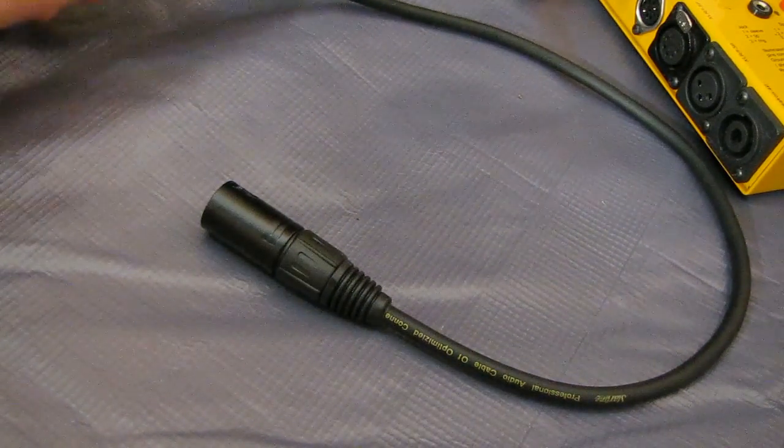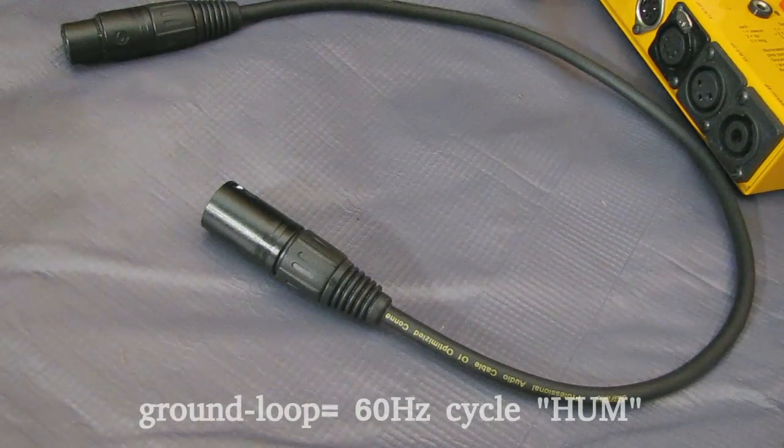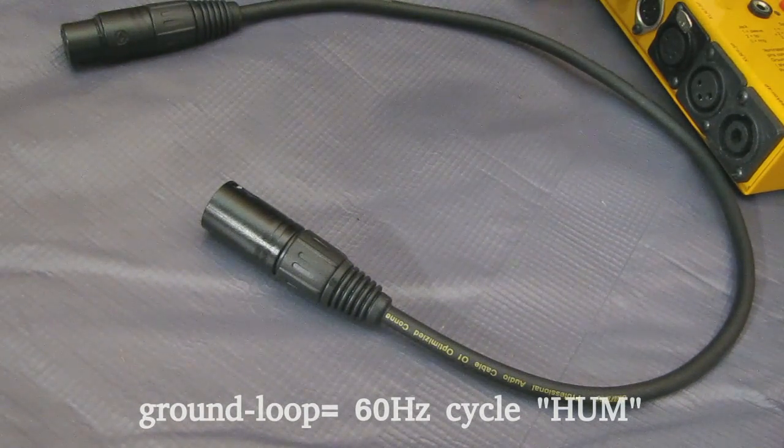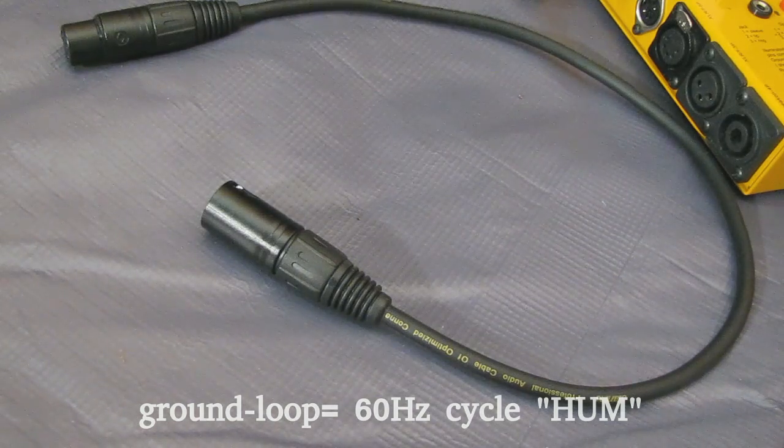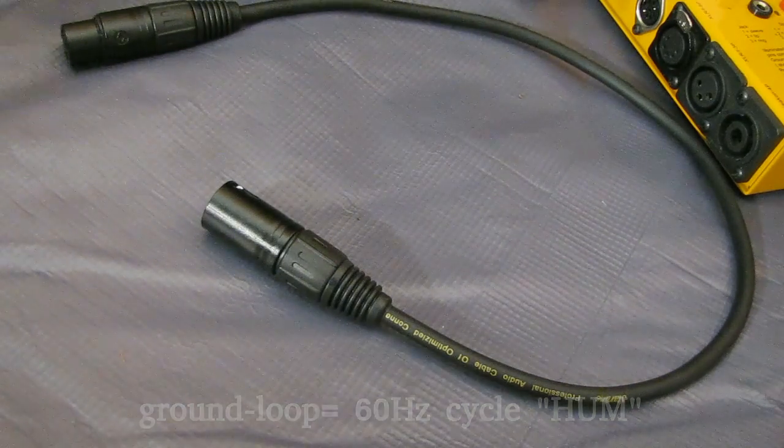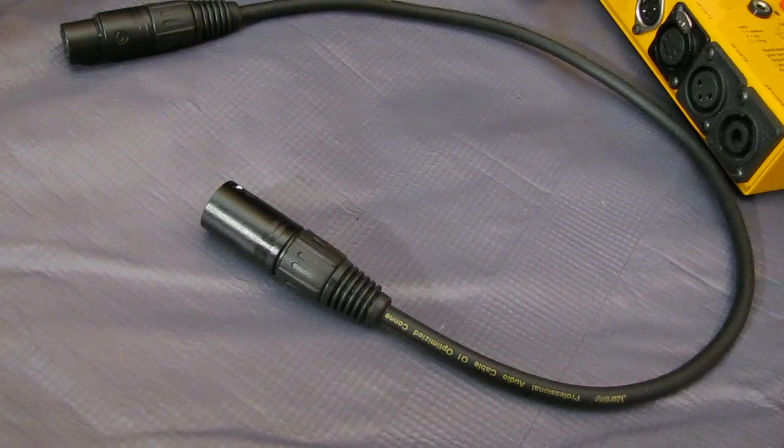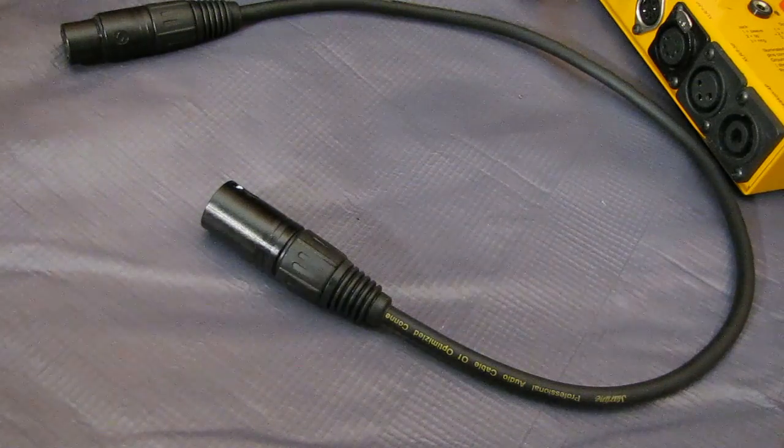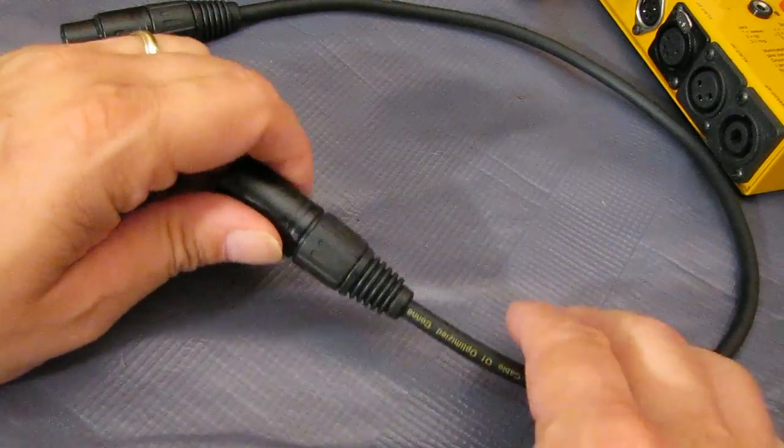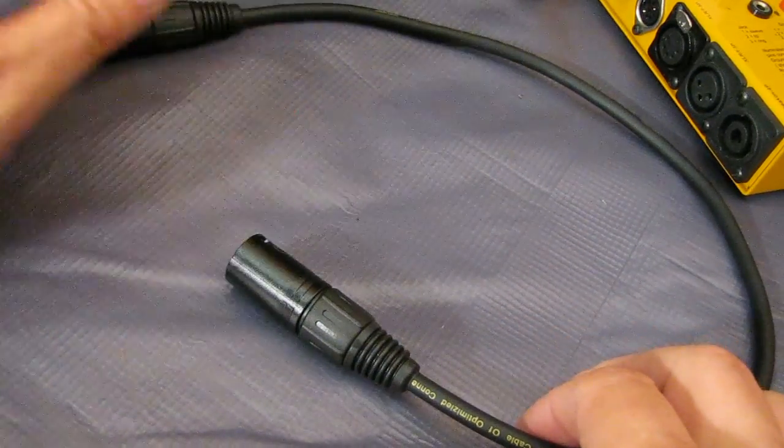A ground loop is a 60 Hertz cycle. It's a very annoying hum that you get in the system when you've got power, let's say your front of house power is on a separate power source than from your stage power such as for your amplifiers.